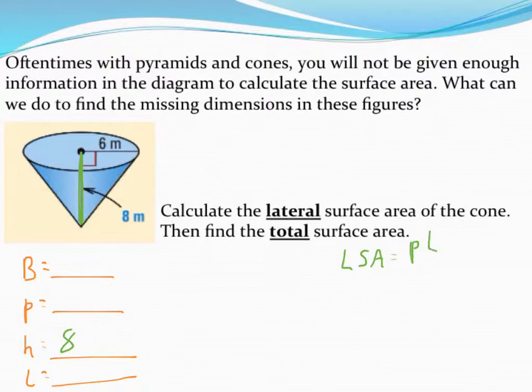Our formula is P times L, perimeter times slant height divided by 2, and then for the total surface area we add on the base. Notice that height doesn't appear anywhere in the formula, so we actually don't need that number.